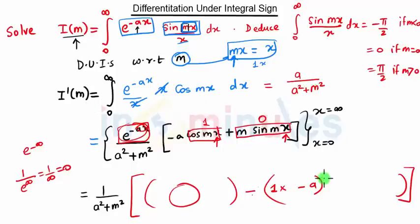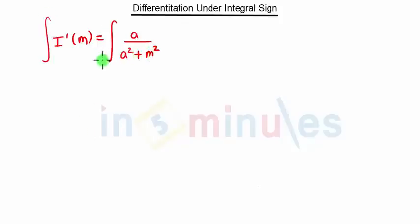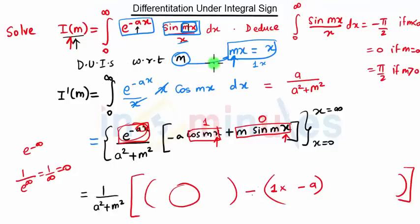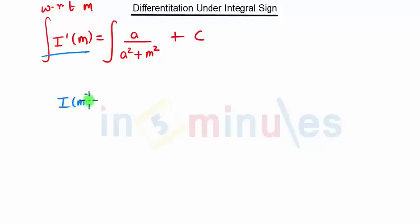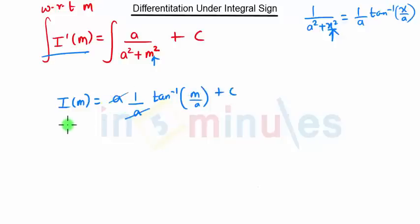We do not want I'(m), we want I(m), so we integrate with respect to m plus constant C. Since the integral of 1/(a² + m²) with respect to m is (1/a)·tan⁻¹(m/a), we have I(m) = a · (1/a)·tan⁻¹(m/a) + C. The a's cancel, giving I(m) = tan⁻¹(m/a) + C.